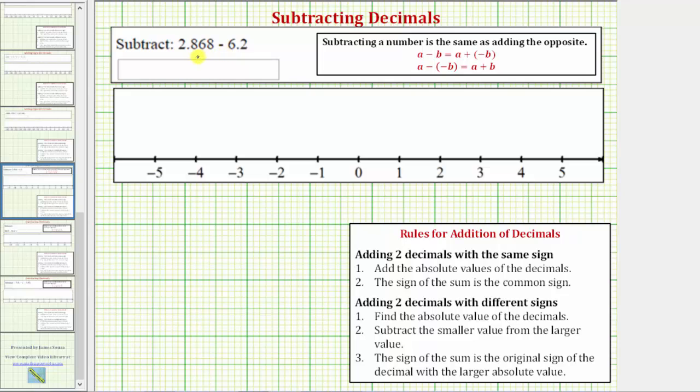And now to find this difference, we'll write the difference as a sum and then use the formal rules for adding signed decimals to find the sum as well as show the sum on the number line.